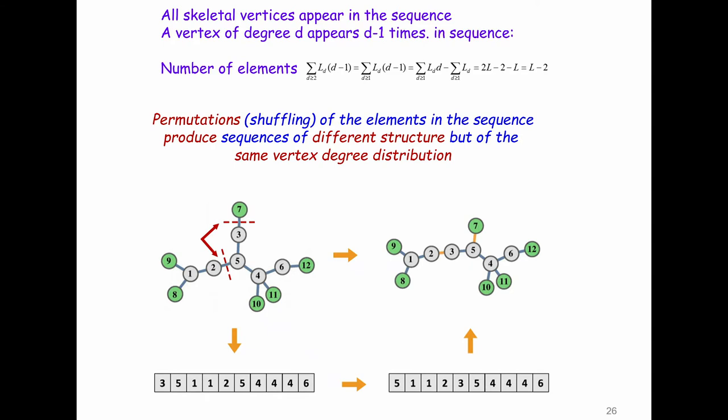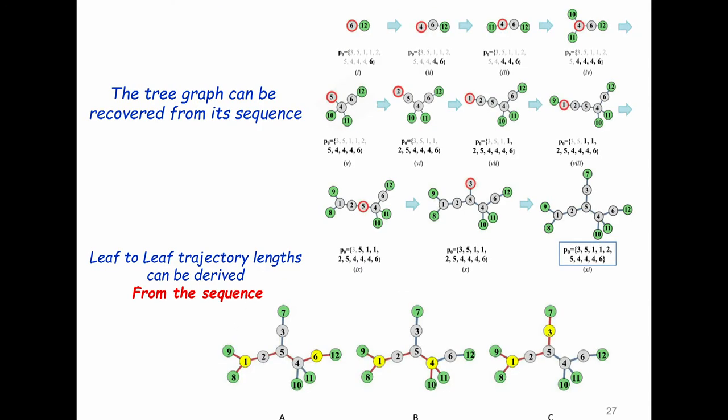Now remember, this is a reflection of the degree distribution. Suppose you permute the sequence, shuffle it, it's the same degree distribution. But if you go from here to here, you get the sequence, you shuffle the sequence, you get another sequence, you go back to the graph and it's different. So you take the original one, you map it, you shuffle it, you get another one with the same degree distribution. And then it's like cutting and sticking differently. So we did that. That's how to go back from the sequence to the graph. We did it. Walter did it.